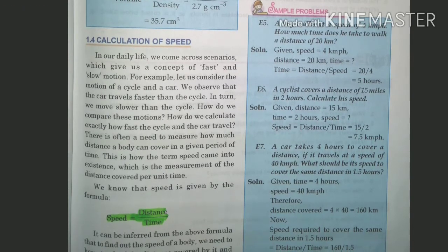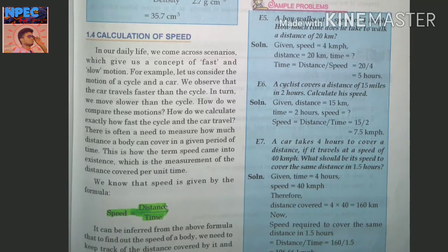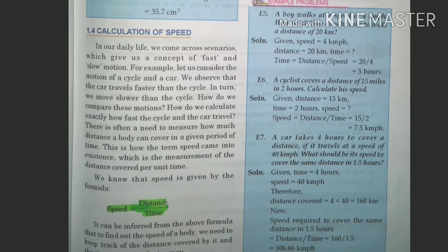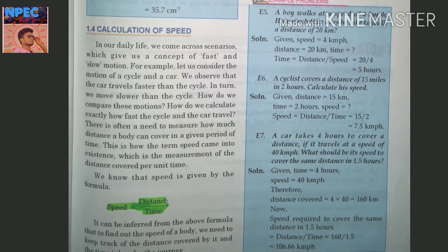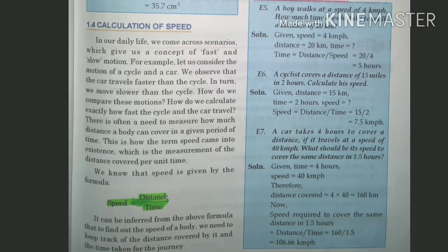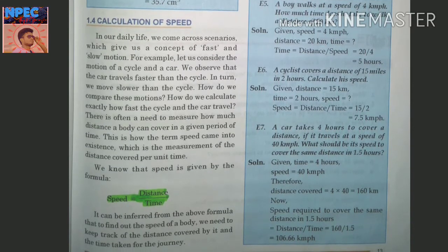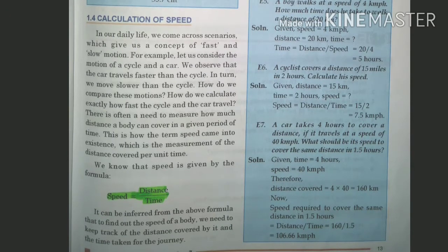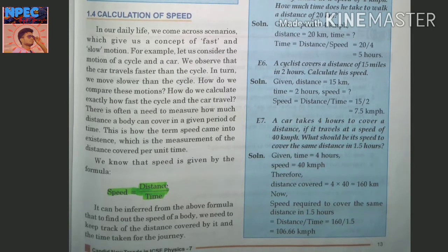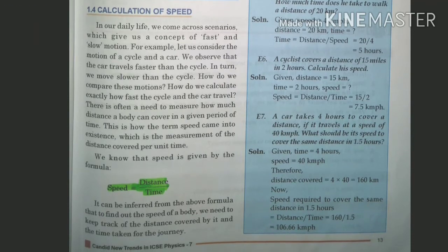It can be inferred from the formula that to find out the speed of a body we need to keep track of the distance covered by it and the time taken for the journey. Speed calculate karne ke liye distance kitna hua aur journey mein kitna time laga — dono jaanna zaroori hai.